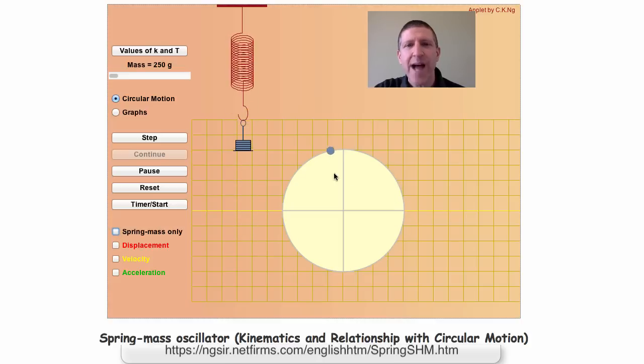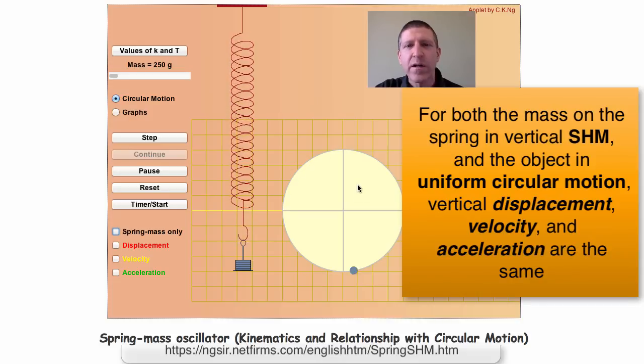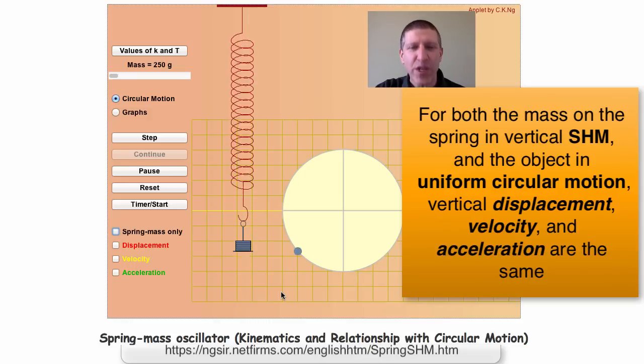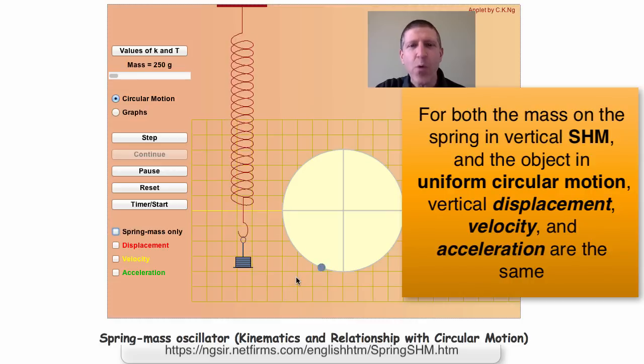Notice that this is an object in uniform circular motion. It's going around a circle at a constant speed. I want you to notice the Y component of this thing going around in a circle is exactly the same as the Y component of our spring. Notice that that spring is following that circling object in the Y direction exactly. So we can model simple harmonic motion with the motion around a circle if we just look at one of the directions - in this situation it is the vertical direction.